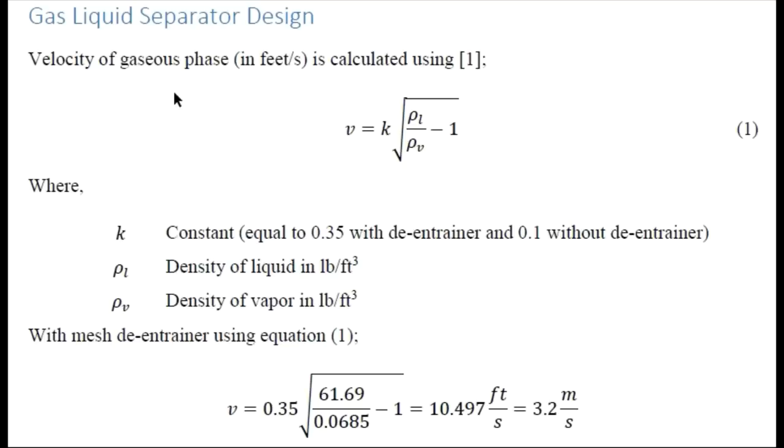First of all we need to find the velocity of the gas stream. We will be using this equation, equation number 1, which includes the densities of liquid and vapor phase and this constant value K. Here you can clearly see that K value is 0.35 for de-entrainer, if we are using some separator at the top to avoid the carry over of moisture, and it is 0.1 if we are not using any de-entrainer. By substituting the values in equation 1 we can find the vapor velocity that is 10.497 feet per second in this case, and we can convert it into meter per second as well.